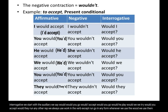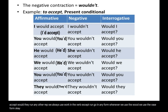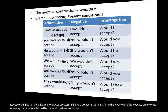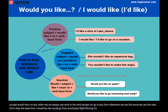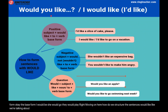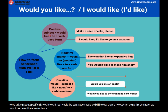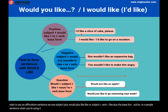Whenever we use 'would,' we always use the base form of the verb — for example, 'I would be,' 'she would go,' 'they would play.' Now, how do we structure sentences with 'would like'? The contraction 'I would like' becomes 'I'd like.' In an affirmative sentence, the structure is: subject + would + like, or subject + would + like + to + base form.